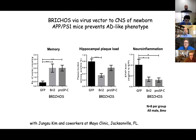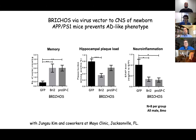We tested this further in transgenic mice that overexpress mutant presenilin, making them form more A-beta 42 peptide. They get all aspects of amyloid pathology — plaques, memory deficits, and neuroinflammation. All these aspects can be prevented if we inject a virus vector coding for the pro-SPC or BRICHOS2 BRICHOS domain. Only the BRICHOS domain can restore memory function in the Morris water maze, reduce plaque formation, and quite dramatically reduce neuroinflammation as measured by GFAP levels by Western blot and immunohistochemistry.